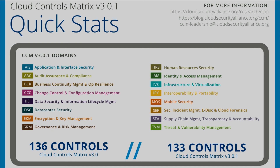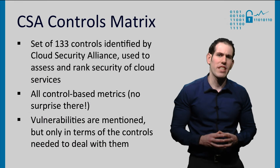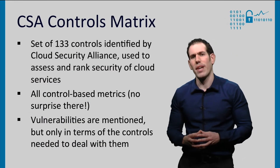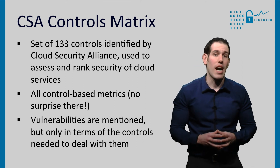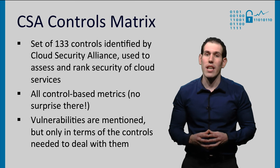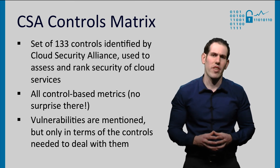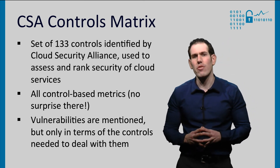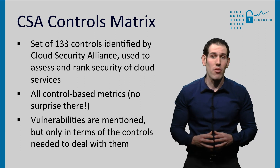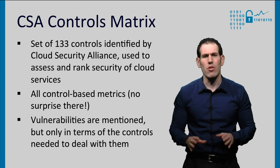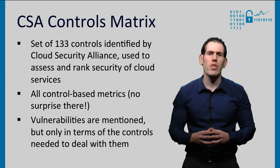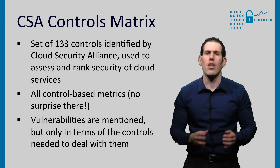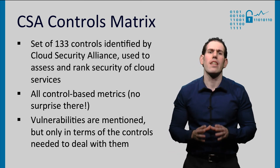The CSA defines security principles to guide cloud vendors and assist cloud customers in assessing the overall security level of a cloud provider. The Cloud Controls Matrix is aligned with CSA's guidance in 16 security domains, including Application Security, Identity and Access Management, Mobile Security, Encryption and Key Management, and Data Center Operations. To estimate this overall security level, more than 130 controls are measured. As the name already tells you, this whole metric is based on controls — it claims to give you a good understanding of the security level of a cloud service, but purely by looking at controls.